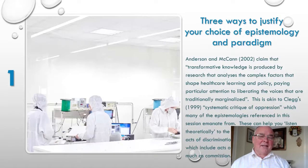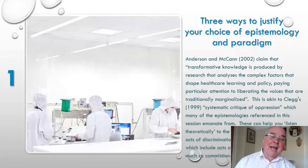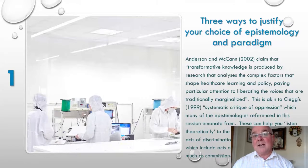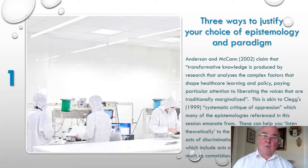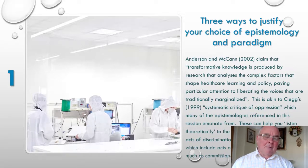Three ways to justify this: Anderson and McCann in 2002 said that transformative knowledge is produced by research that analyses the complex factors shaping healthcare, learning, and policy, paying particular attention to liberating the voices that are traditionally marginalised. Your research could end up being transformative because it's touching people who aren't normally touched. Clegg in 1999 referred to a systematic critique of oppression — your research can look out for those hidden, marginalised voices and critique the forms of power, domination, and hegemony that keep them oppressed.